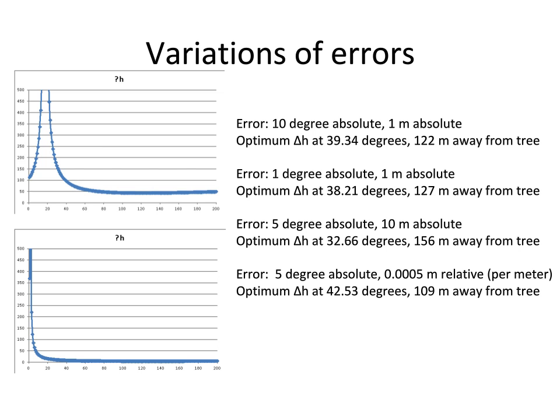For each case when it says optimum delta H at some distance away from the tree it means at that distance away from the tree it is the optimal distance given those errors to measure the height of the tree.